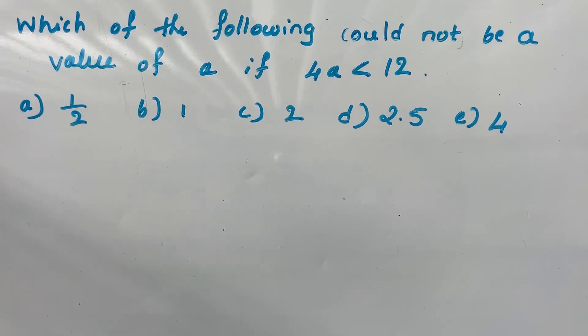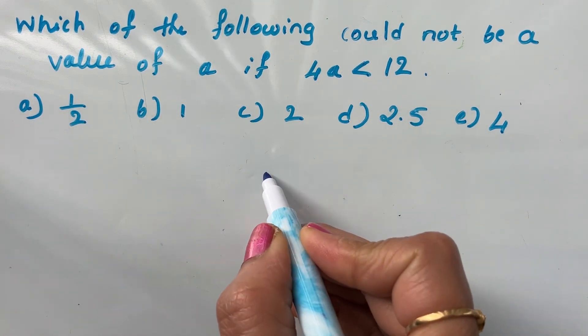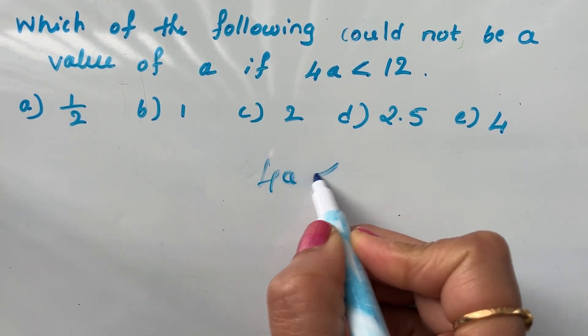Namaste, today's question: which of the following could not be a value of a if 4a is less than 12? What is given: 4a is less than 12.